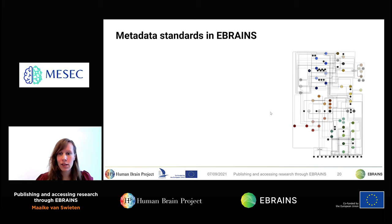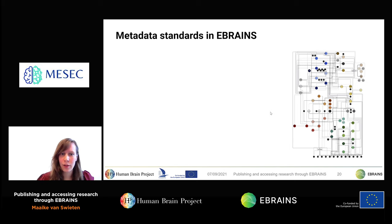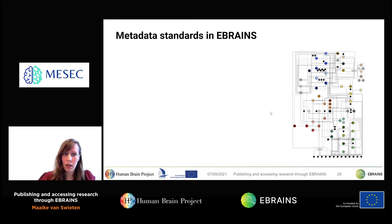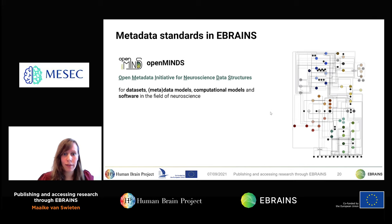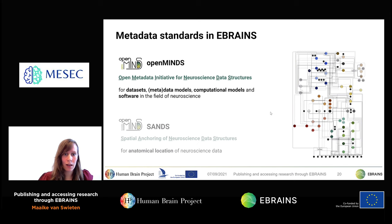In eBrains, we use metadata standards to curate data. These standards establish a common meaning and semantics for datasets and ensure correct interpretation by owners and other users. The neuroscience field covers a wide variety of research products such as experimental data, simulated data, computational models, and software. OpenMinds was developed for this specific purpose — it captures common attributes of neuroscientific research and makes comparison between studies possible. OpenMinds also includes a module for standardization of neuroanatomical locations, which can be used to integrate data in brain atlases.